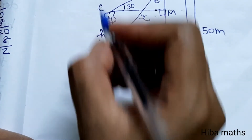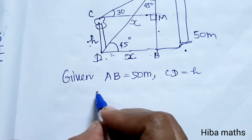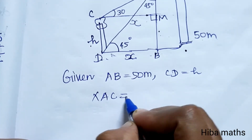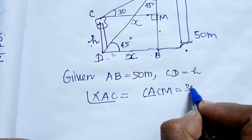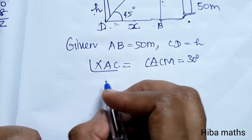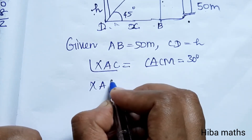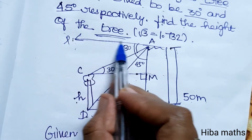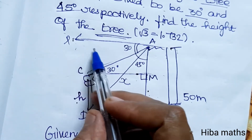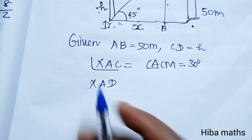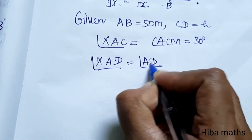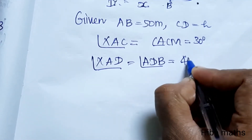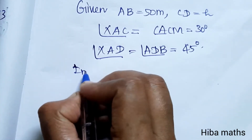This angle X is equal to angle XAC, which is equal to angle ACM, that is equal to 30 degrees. And 45 degrees is equal to angle XAD. Angle XAC equals angle XAD, and angle ADB is equal to 45 degrees.